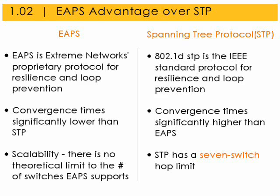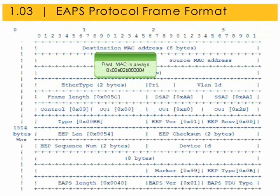Spanning Tree is the IEEE standard protocol for resilience and loop prevention. EAPS has certain advantages over Spanning Tree. For instance, convergence times are significantly lower, and when it comes to scalability there is no theoretical limit to the number of switches EAPS supports, whereas STP has a seven-switch hop limit.